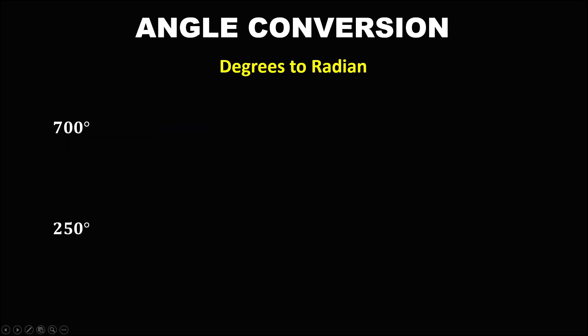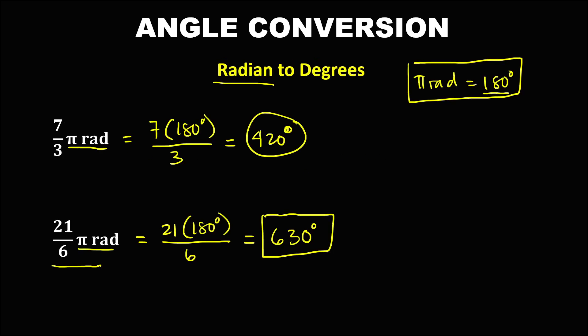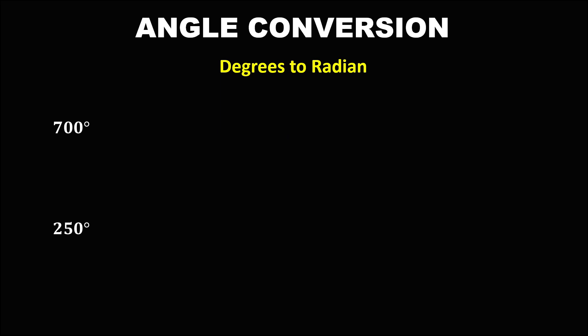Now for degrees to radian conversion. To convert degrees to radians, divide the given angle by 180 degrees and attach the π rad unit.